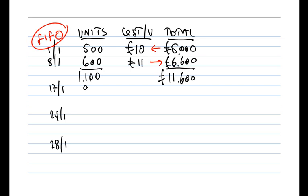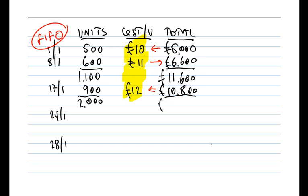On the 17th of January, there's a further purchase of 900 units with a total value of £10,800. Taking £10,800 divided by 900 units gives £12 per unit. You may notice the cost per unit is gradually increasing — inflation tends to mean prices rise over time. Looking at the inventory position, we had 1,100 units at end of day on the 8th, and just bought another 900, so we now have 2,000 units with a total value of £11,600 plus £10,800 = £22,400 at end of day on the 17th.